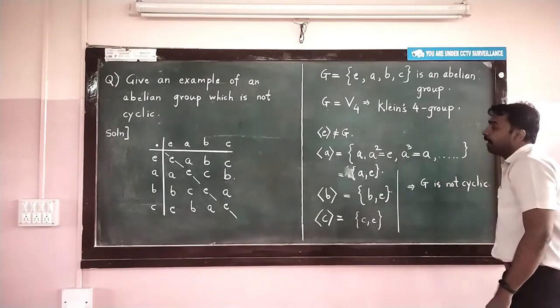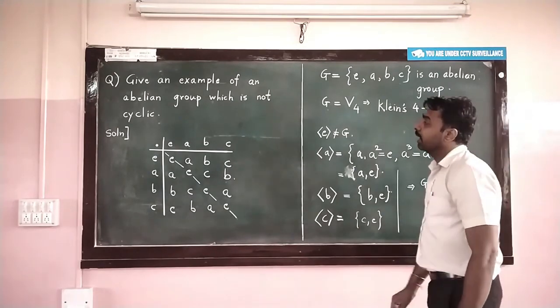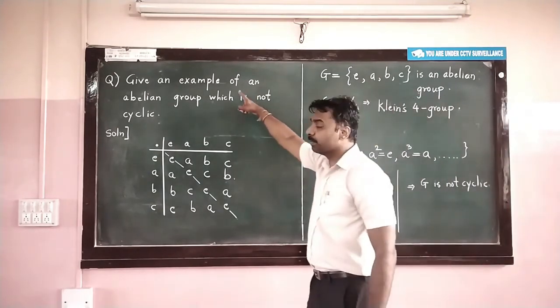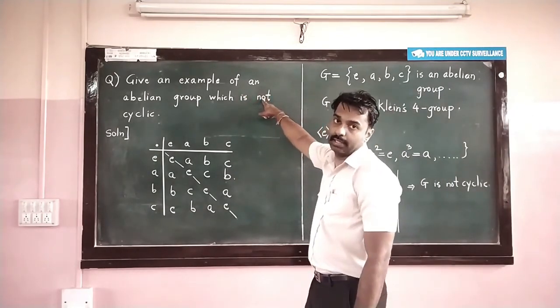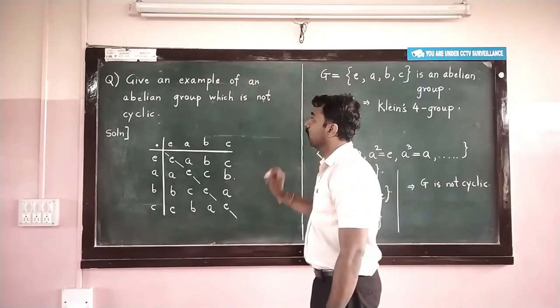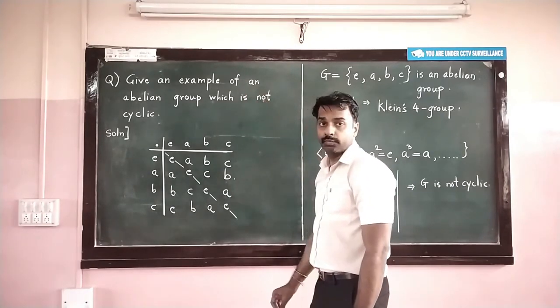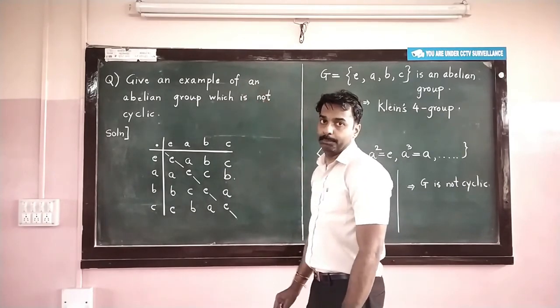So we have found an example of an abelian group which is not cyclic. This ends the solution of this problem.